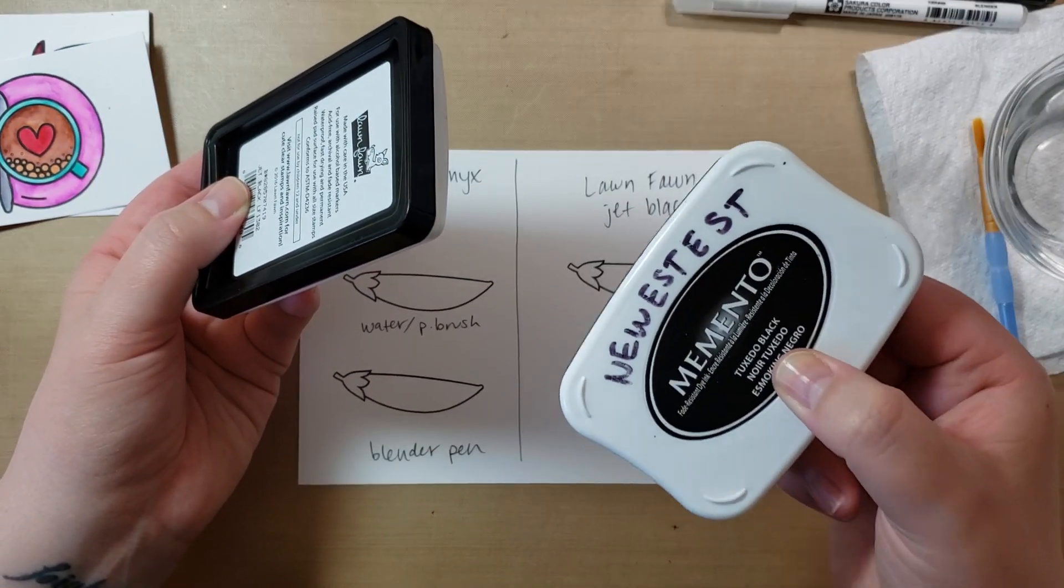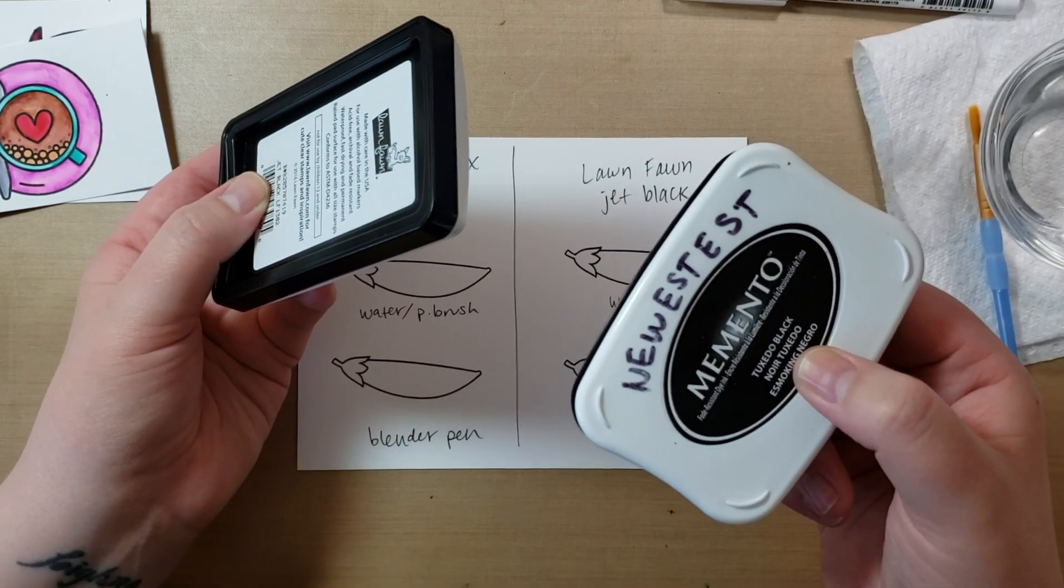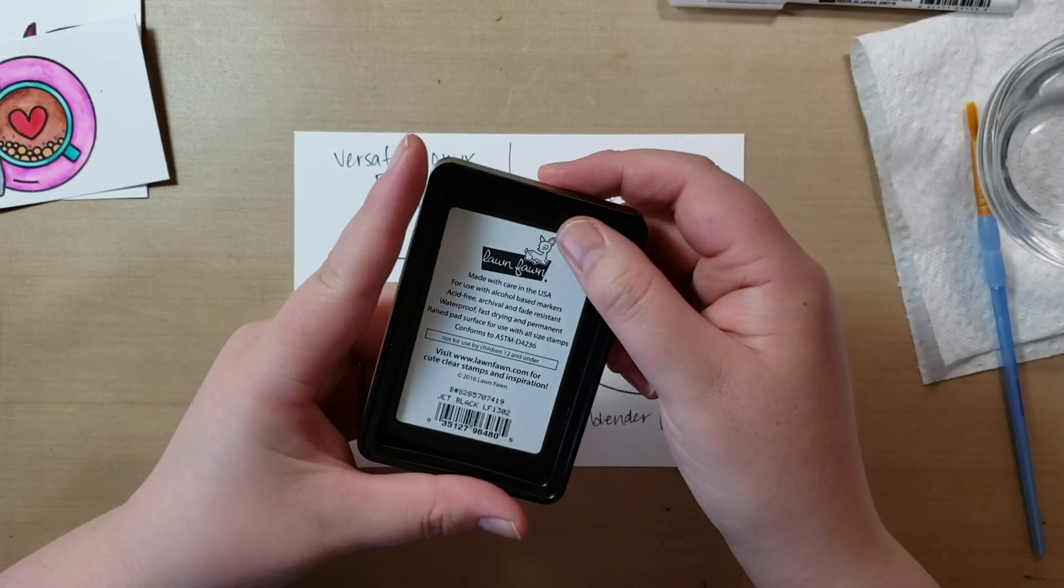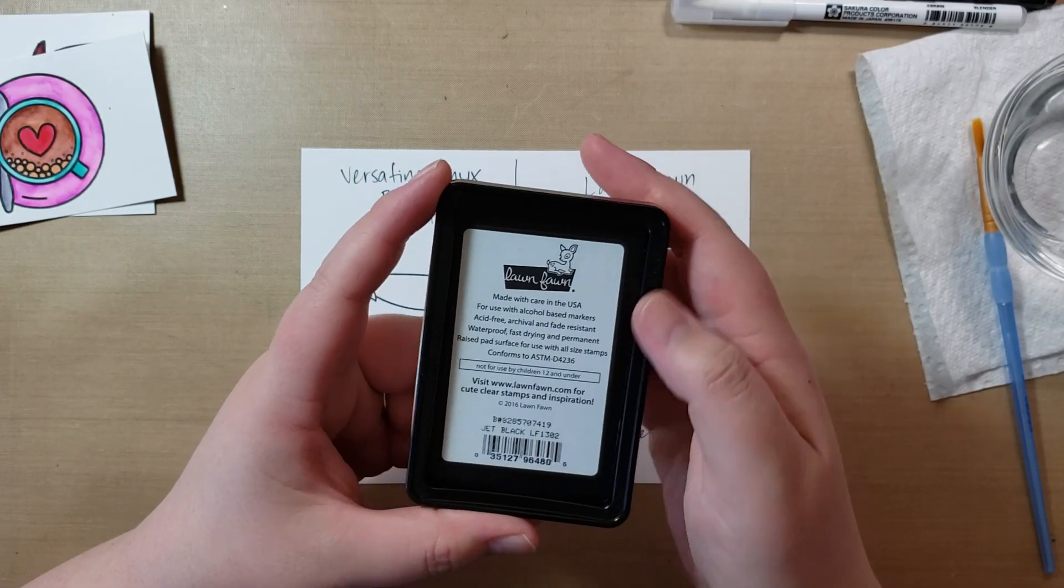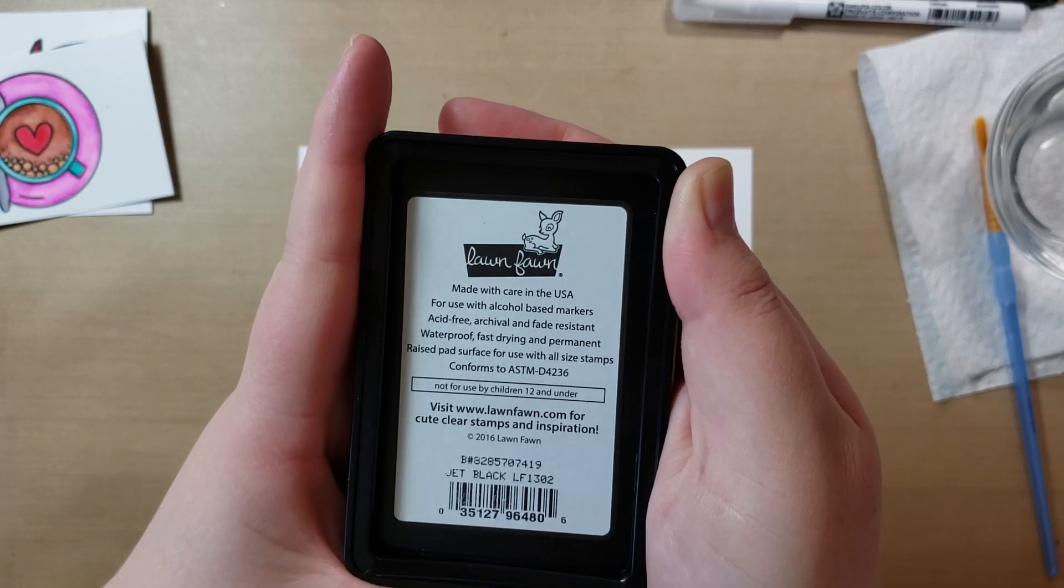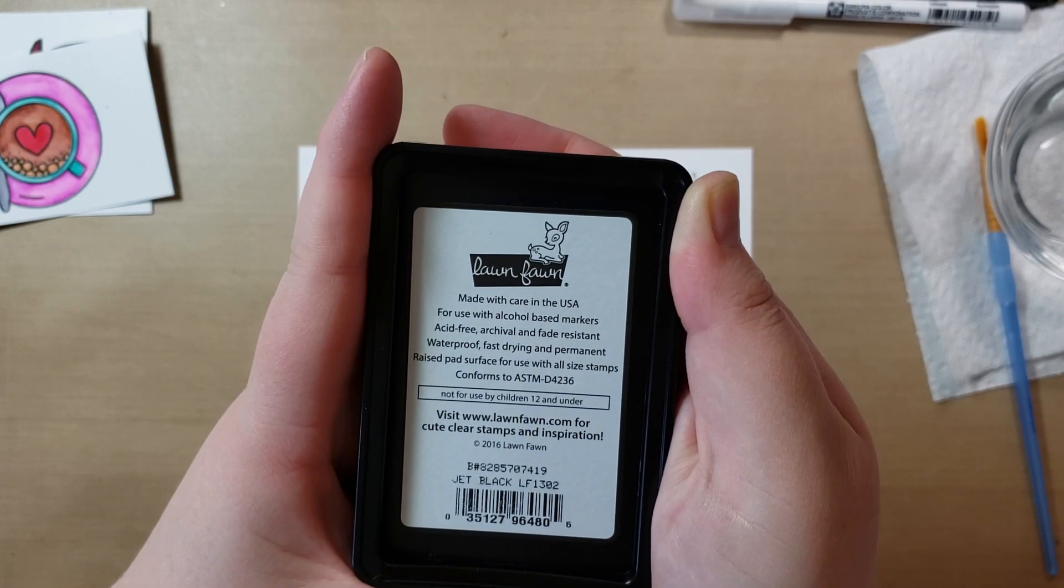I think I might have tried like over a year ago, and possibly it bled, but I don't remember. But this says, for use with alcohol-based markers, acid-free, archival, and fade resistant, waterproof, fast drying, and permanent. So the thing I like about this ink is that it's fast drying.